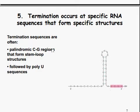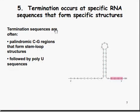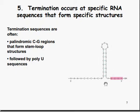Termination occurs at specific RNA sequences that form specific structures. The termination sequences are often a palindromic CG region that forms a stem loop, which is often followed by a poly-U sequence — U-U-U, a whole bunch of U's at the end. So CG-CG-CG-CG, forming the stem loop, with the U-U-U at the end.